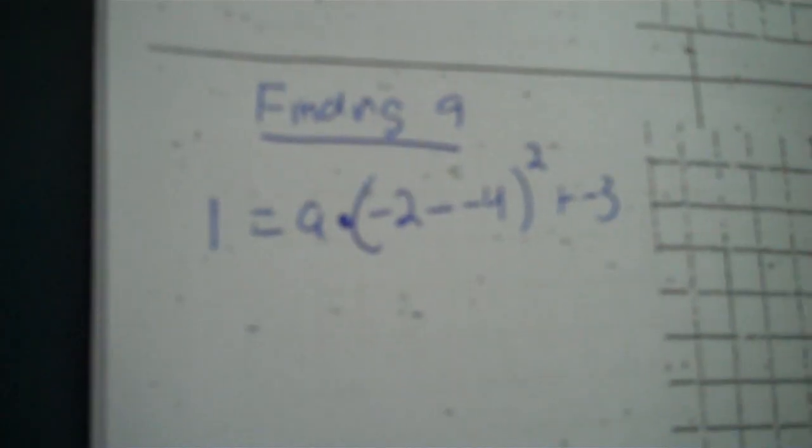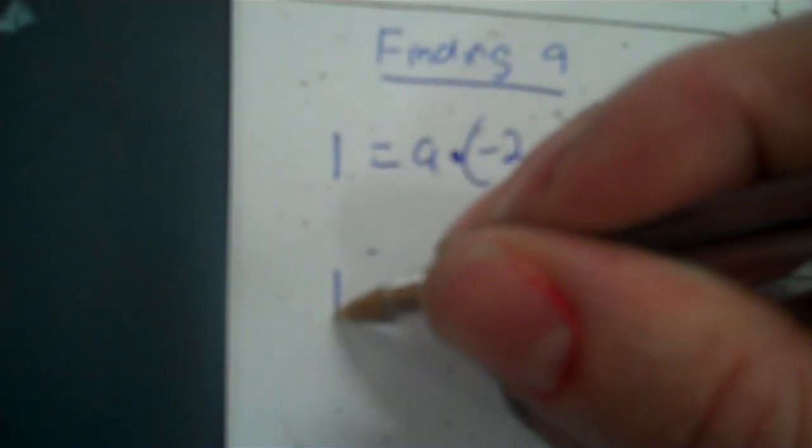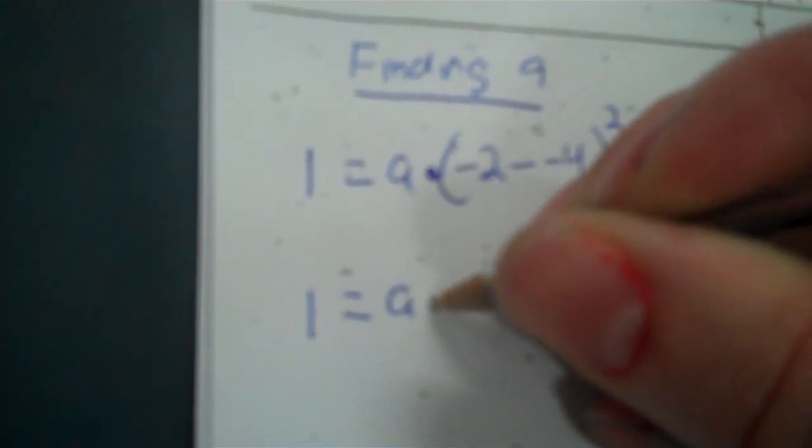Now we need to figure out what's inside the parentheses to the second power before we do anything else. You're minusing a negative, so make it plus plus. Go parentheses, negative 2 plus 4, close it, and hit the second power key. It's going to be 4, because negative 2 plus 4 is 2, and 2 to the second power is 4. So it's a times 4, and then we put plus negative 3.